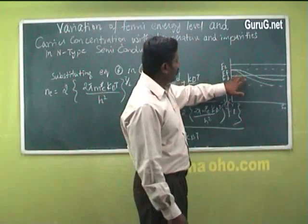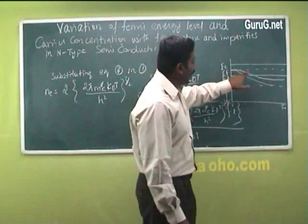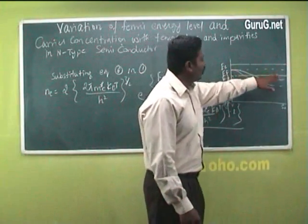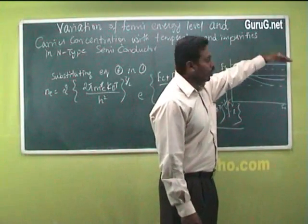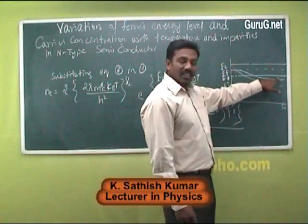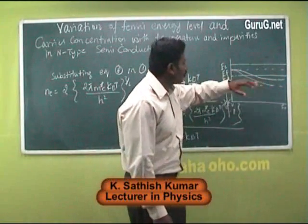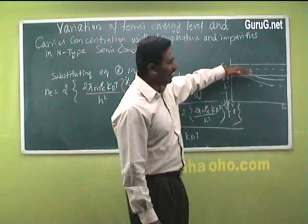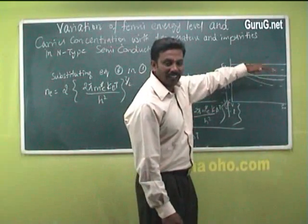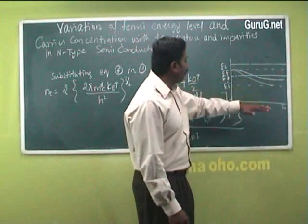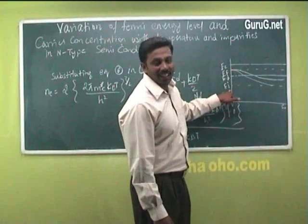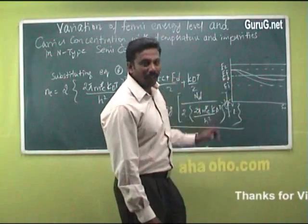When the temperature increases, some electrons from the donor energy level will be shifted to the conduction band. While shifting, a hole will be created in the donor energy level. Due to this, the Fermi energy level gets down to compensate the unfilled state and it approaches a level called EI — the intrinsic Fermi energy level.